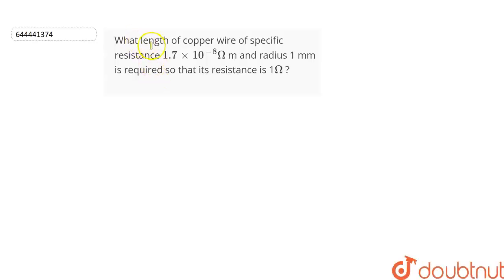The question is: what length of copper wire of specific resistance 1.7 x 10^-8 ohm meter and radius 1 mm is required so that its resistance is 1 ohm?